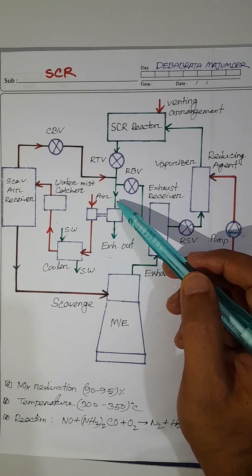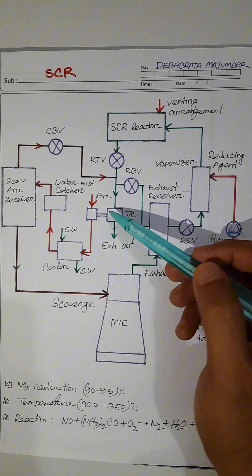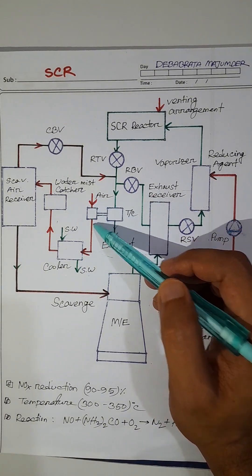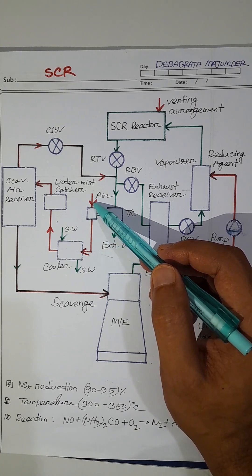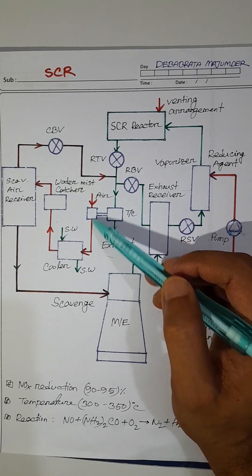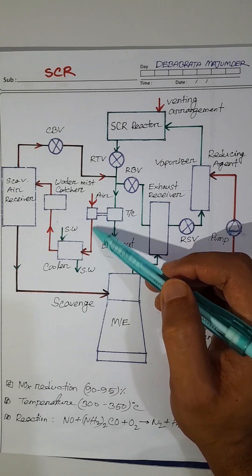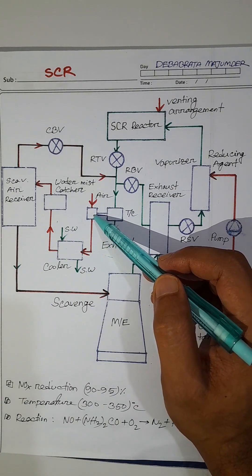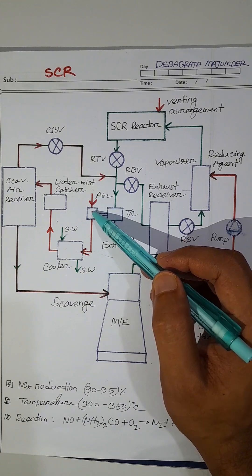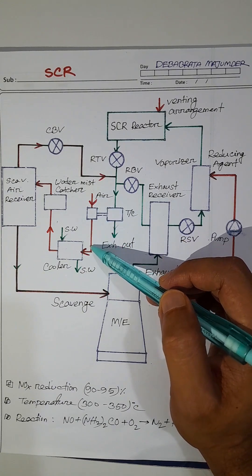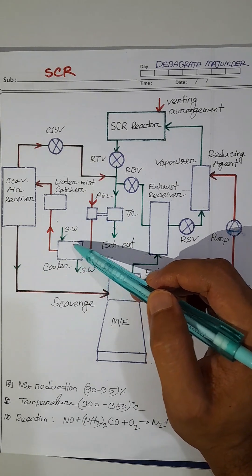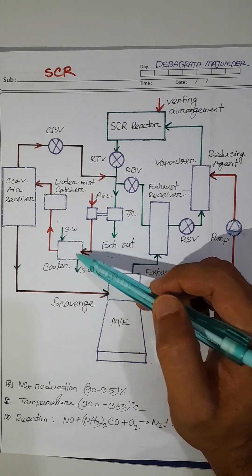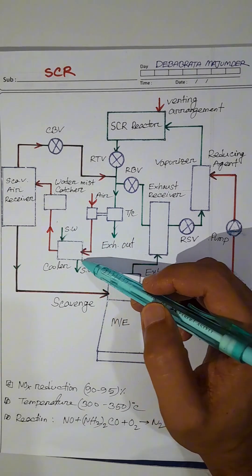According to the exhaust of the main engine, the turbocharger provides scavenger to the main engine. This is the turbine side, this is the compressor side. Scavenger is sucked and passed through the cooler, which is sea water cooled — sea water in and sea water out.